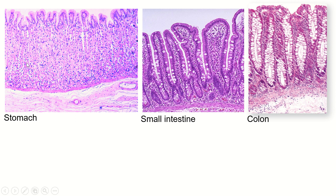Now comparing stomach, small intestine, and colon: notice first of all that the mucosa of the stomach is absolutely huge — this must be at a much lower magnification because we can barely see the individual goblet cells. This part is maybe about the same size in all three, but the mucosa of the stomach also includes all of these gastric glands.